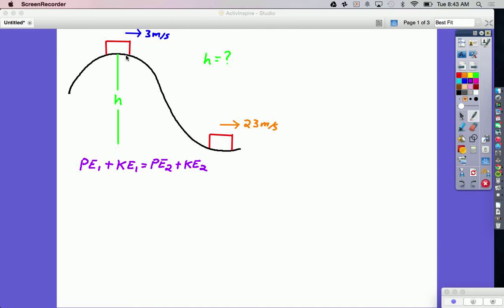Like in this spot at the top of the hill we know how fast it's going but we don't know where exactly it is. We don't know how high it is off the ground and that's what we're going to try and find.